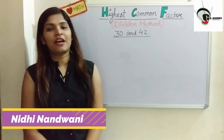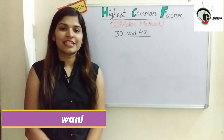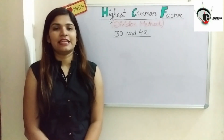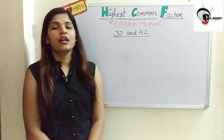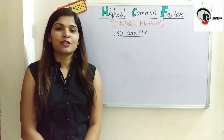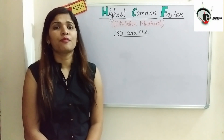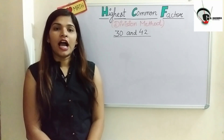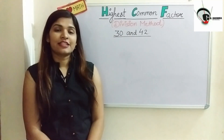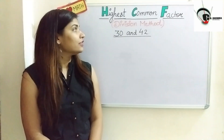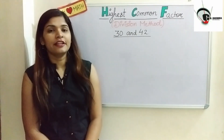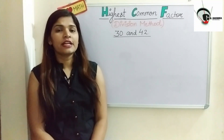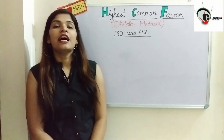Hello children. In our previous video we have seen how to find the HCF by the prime factorization method. Although it's an easy and convenient method, sometimes whenever we have large numbers to calculate the HCF, this process of taking prime factorization becomes tedious and time-consuming. For that, a Greek mathematician Euclid has devised a method to find the HCF by a method called the long division method.